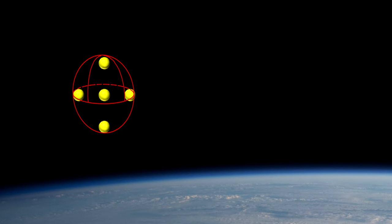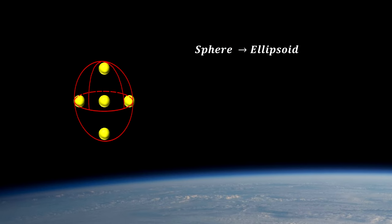This changes the shape of the volume from a sphere to an ellipsoid, but the total volume remained unchanged. The Einstein tensor is zero, even as the curvature of the space is not zero.